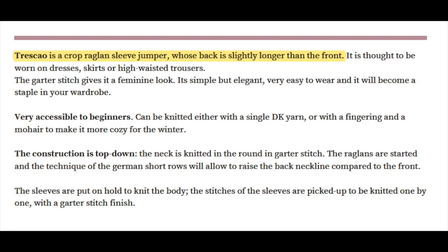At the top of page three we see that Triscau is described as a cropped raglan sleeve jumper whose back is slightly longer than the front. The construction is top-down, so you'll be knitting the neck of the sweater first, then working down toward the sleeves and the main body of the sweater. There is very little finishing work involved, meaning you won't need to go back and pick up stitches for the collar, and sleeve stitches are put on waste yarn and worked later. The sweater is worked in stockinette and garter stitch without any special stitches or motifs, making this a beginner-friendly pattern — one of the reasons I chose it as the backbone of this class.